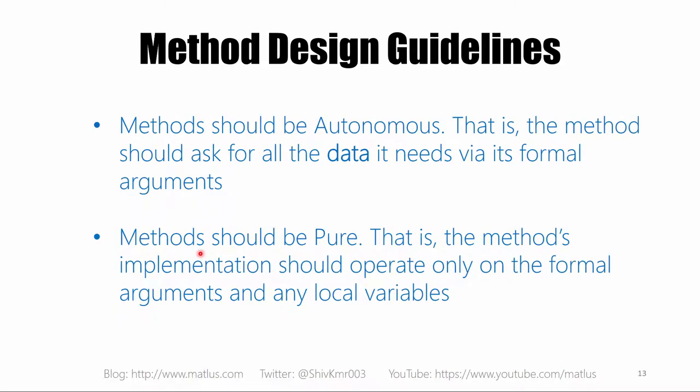Methods should be autonomous — what I call self-standing methods. A method should ask for all the data it needs via its formal arguments. The method should not rely on information set prior to calling it. A lot of times people will set properties on an object and then call a method, so it's not clear by looking at the method signature that properties need to be set beforehand. Don't do that — the method itself should ask for all the data it needs via the formal arguments.